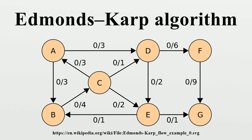Breadth-first search subroutine: Input C, E, S, T, F. Output M, P. P equals array; for U in 1..N, P[U] equals -1. P[S] equals -2. M equals array; M[S] equals infinity. Q equals queue. While Q not empty: for V in E[U], if C[U][V] minus F[U][V] greater than 0 and P[V] equals -1, set P[V] equals U, M[V] equals min. If V equals T, return M[T], P. Else return 0, P.